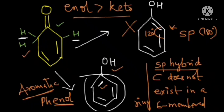In general, the keto form is more stable than the enol form, but when there is added stability — such as aromaticity — the enol form becomes more stable. That's all for this video. If you liked it, subscribe to the channel and leave your comments below.